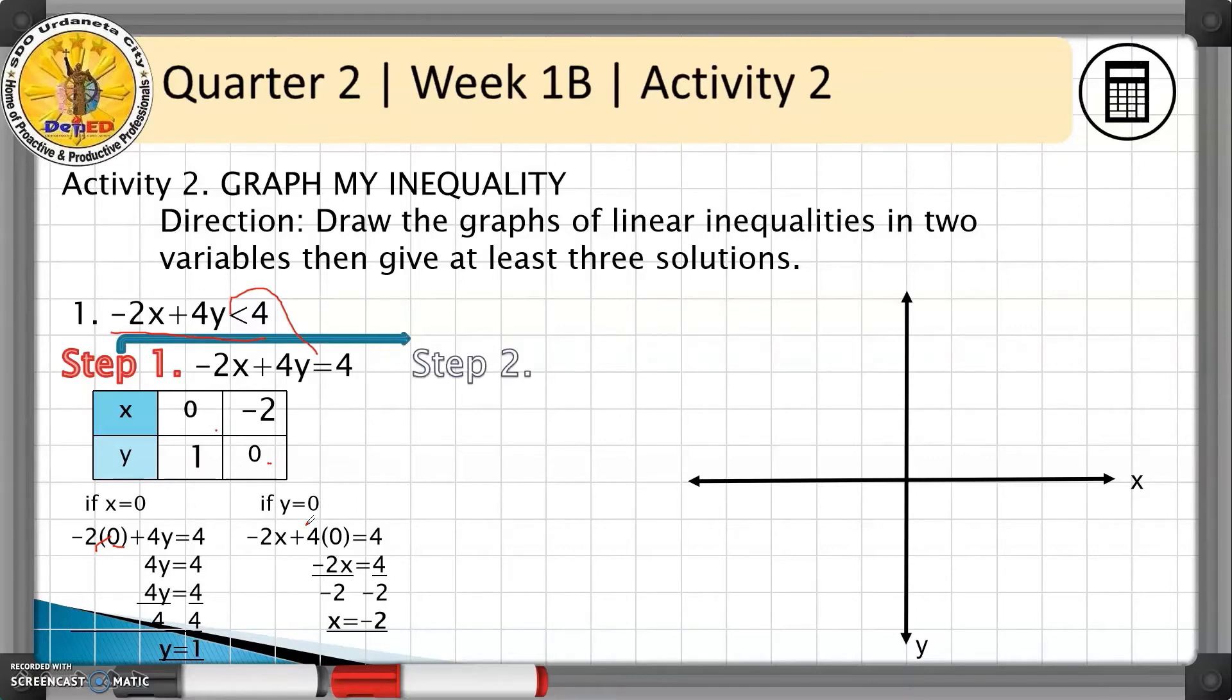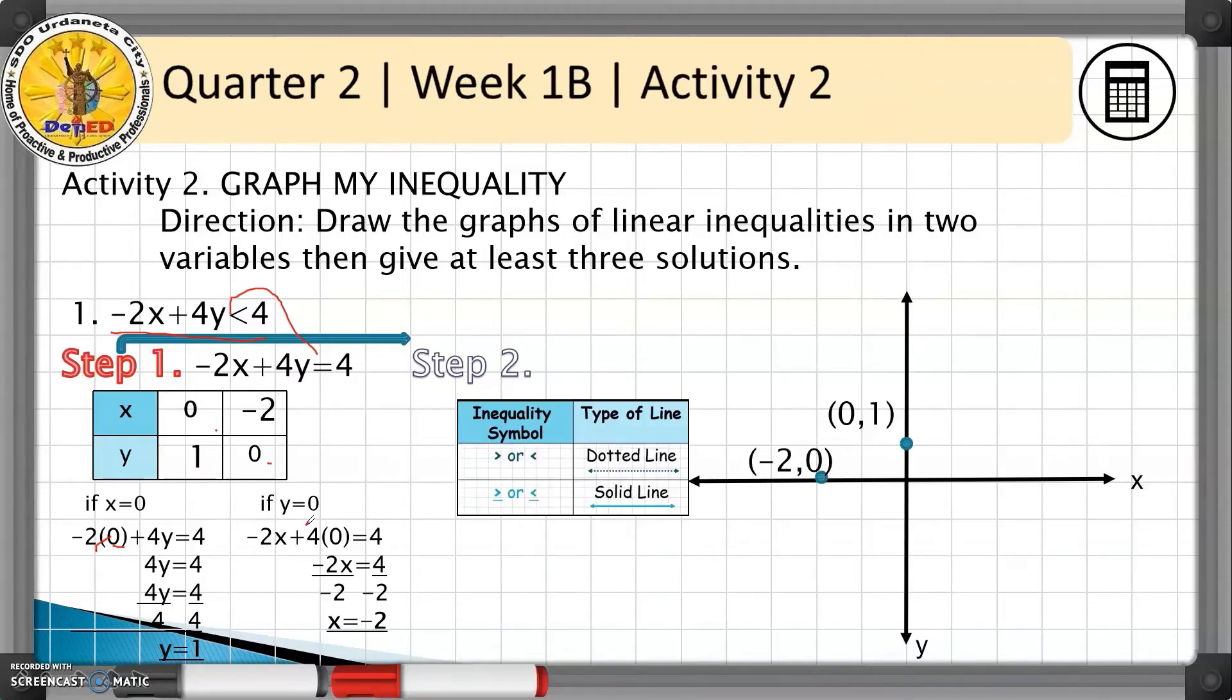Step two is to graph. Let's plot the point (0, 1) and the point (-2, 0). Next, we'll connect the points using either a dotted line, broken line, or solid line depending on the inequality sign used. Since the inequality is less than, we'll use a broken line.